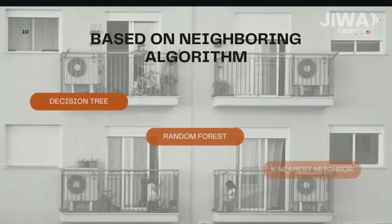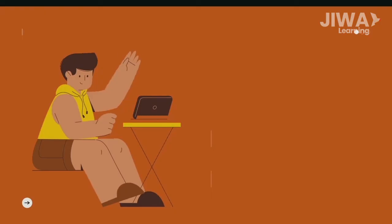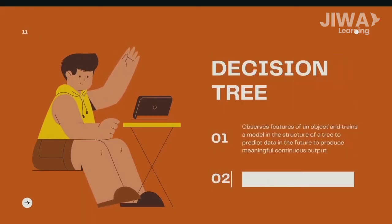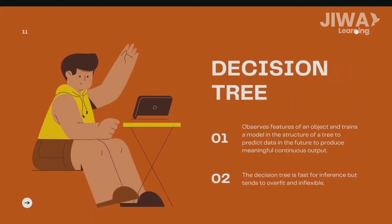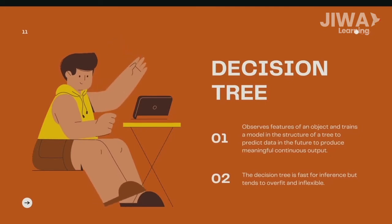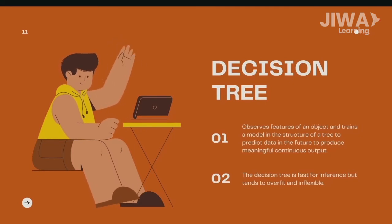The first group is algorithms based on neighboring structures, such as decision tree, k-nearest neighbor, and random forest. Decision tree regression observes features of an object and trains a model in the structure of a tree to predict data in the future and produce meaningful continuous output.